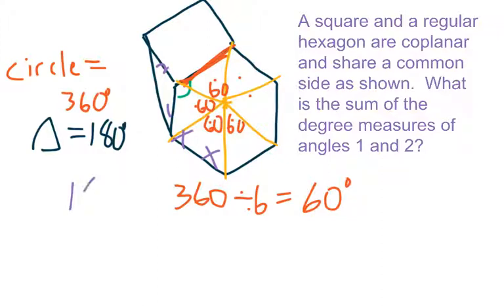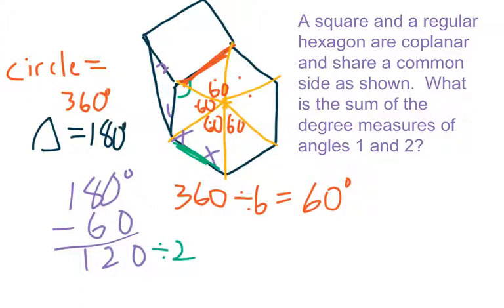Well, I just take 180, my degrees in a triangle, subtract the 60 I have, I get 120. And then I have two of these angles, so if I divide it by 2, I get 60 for each of those. So that means this is 60, and this is 60.